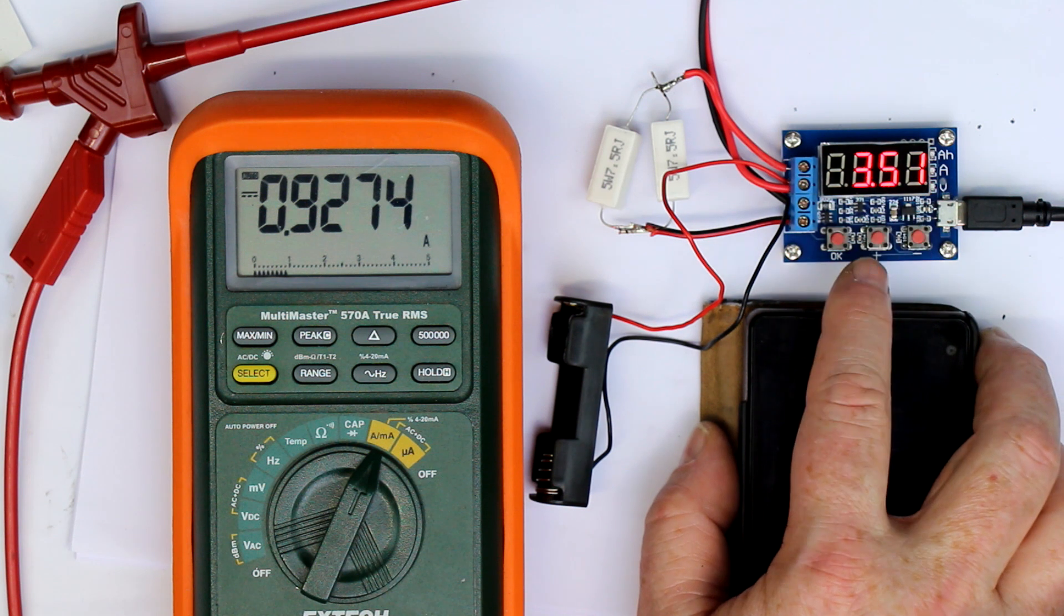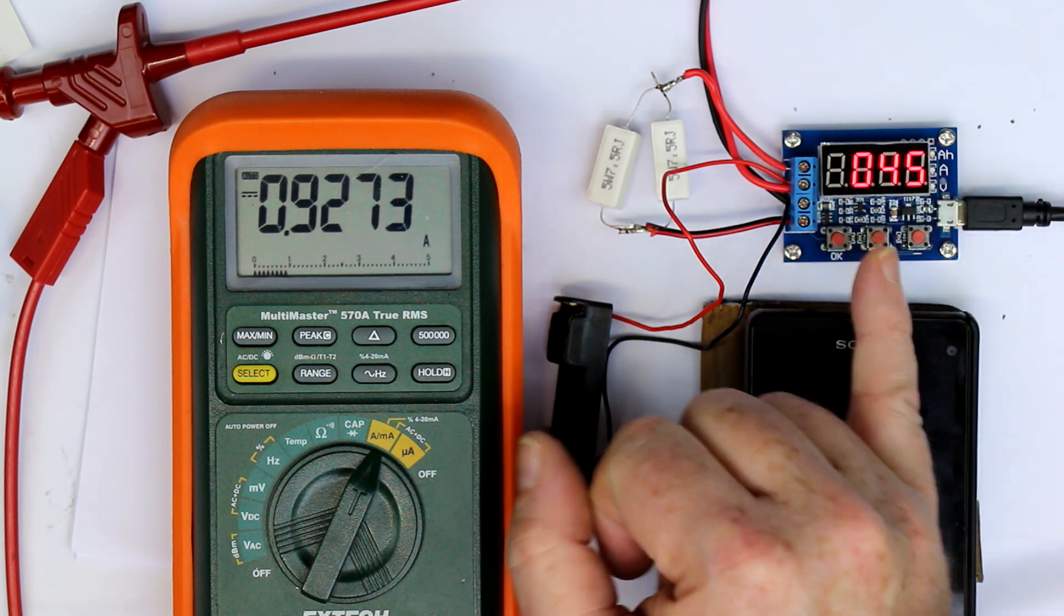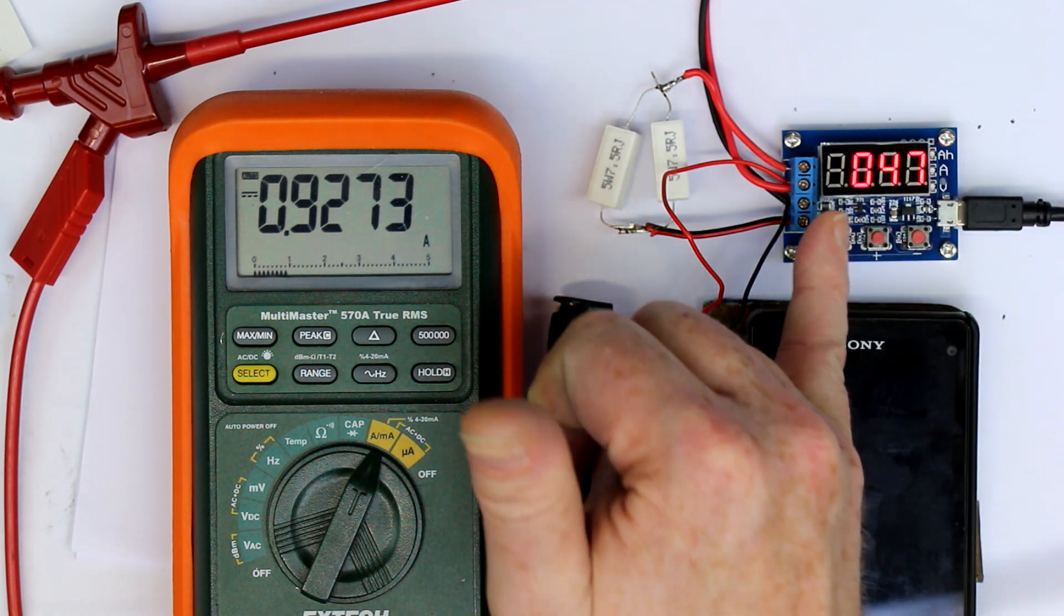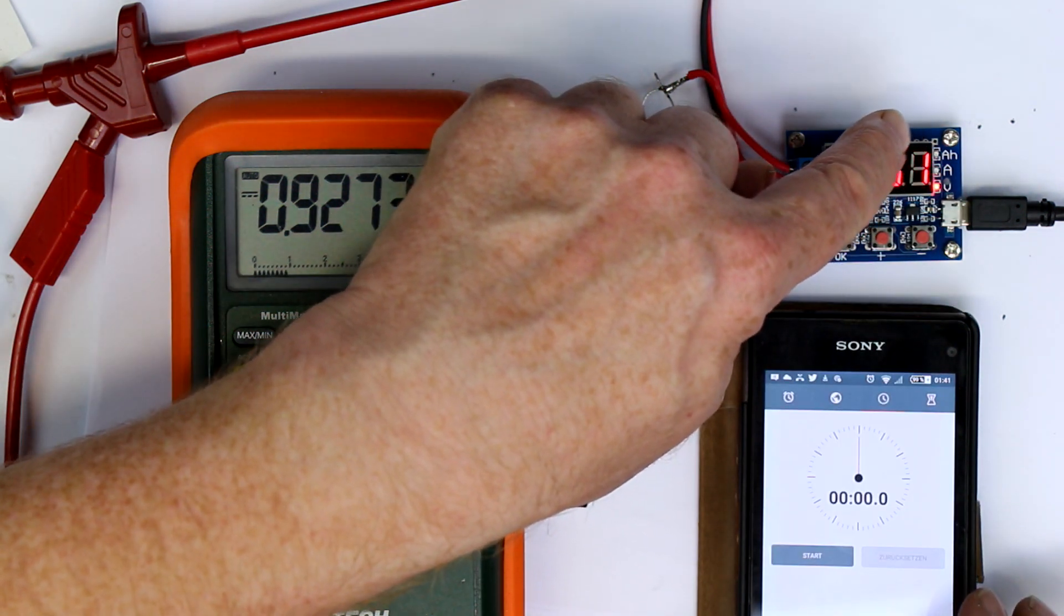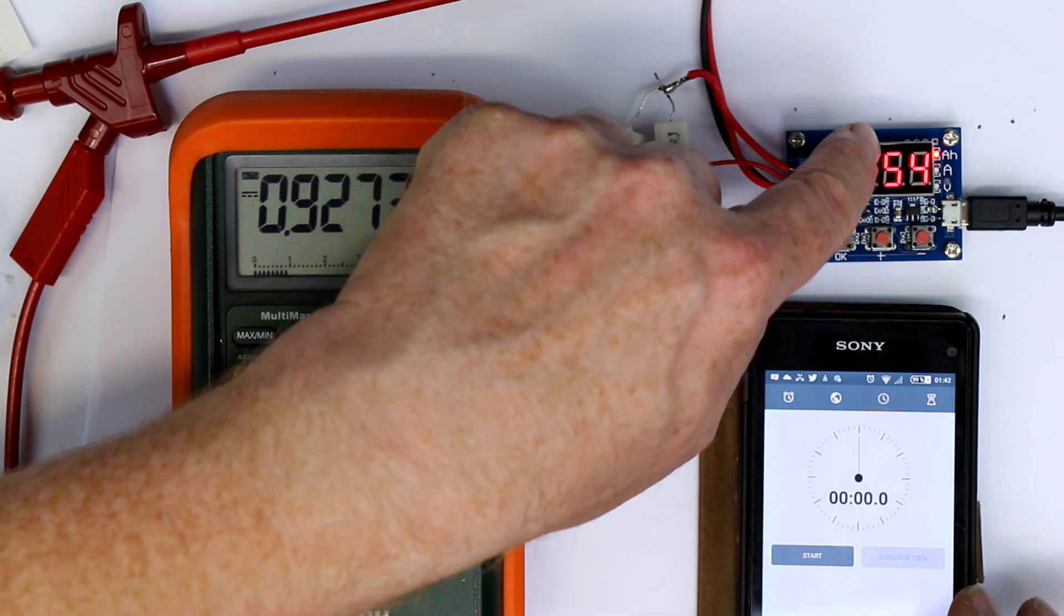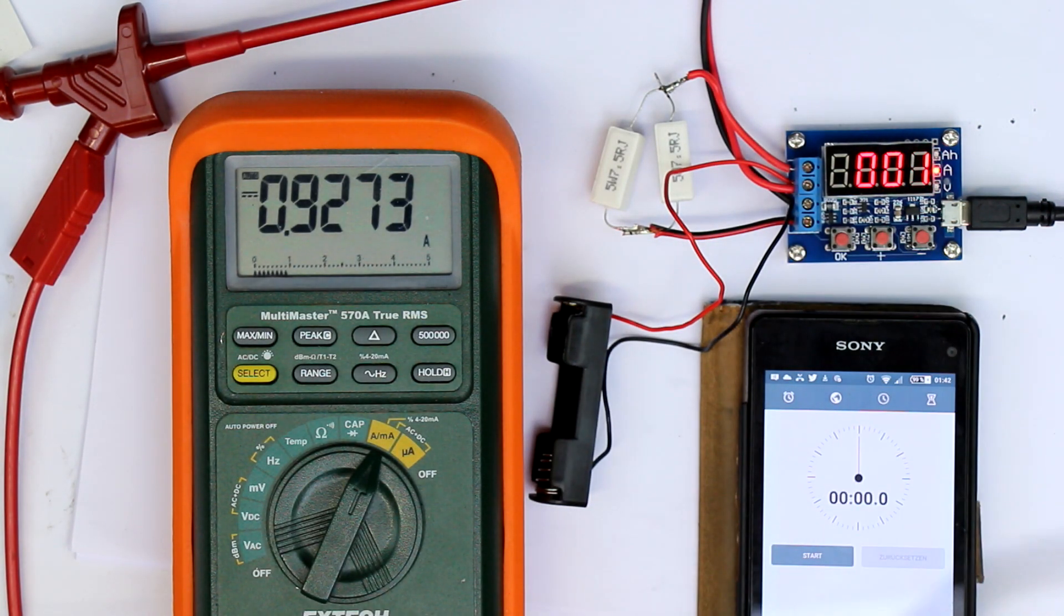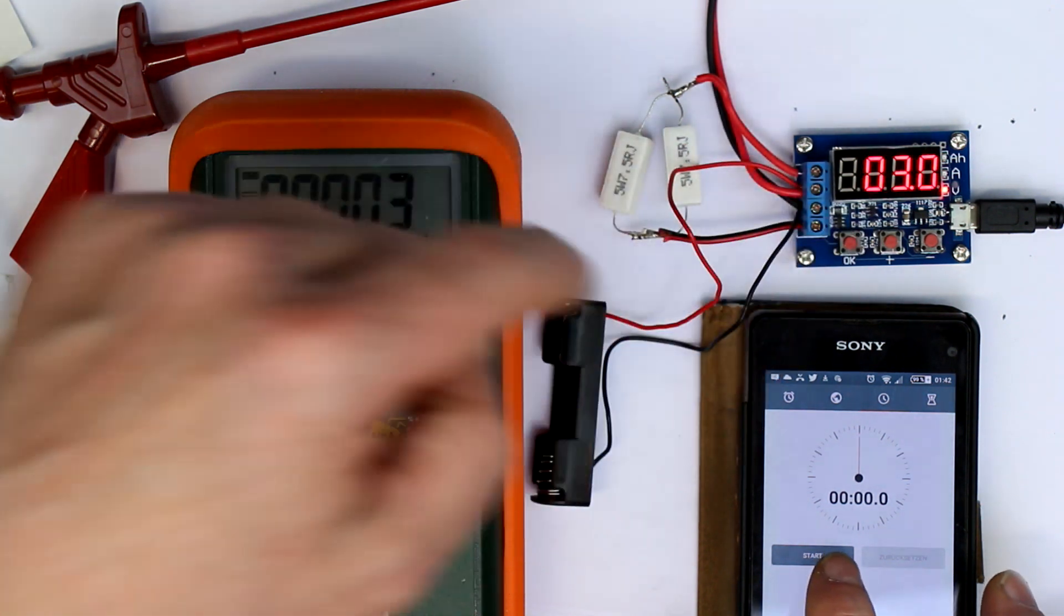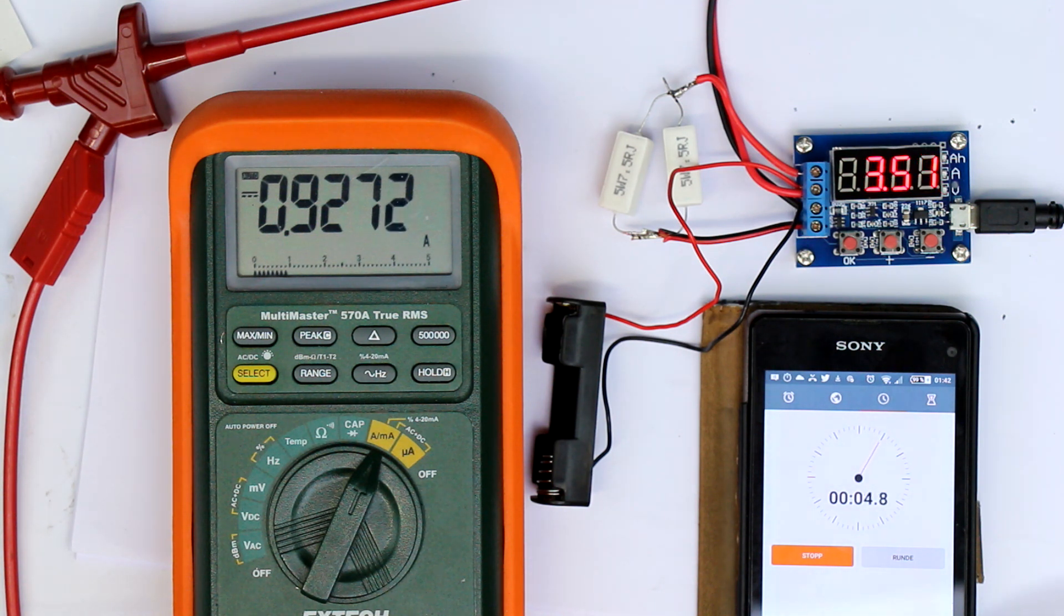I've dialed in a constant current from my power supply so that the displayed value is exactly 1000 mA, so 1A. You can see, remember, the most significant digit is missing, so this would be a 1 here. We just time a certain period and then compare the displayed value of the mAh with the time. And because we know the current, we can see how much it is off. Let me start this thing here in sync with a stopwatch. And then we just wait for a few minutes and compare the results.